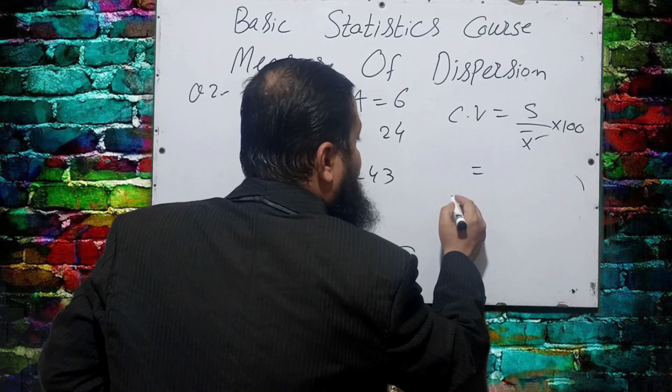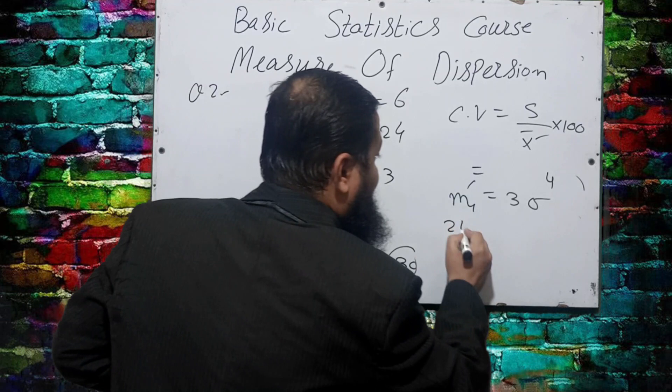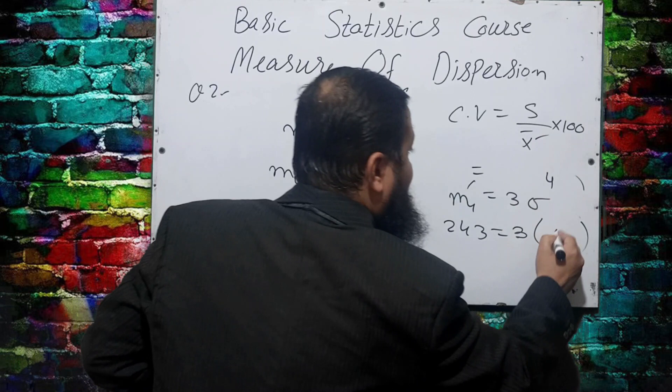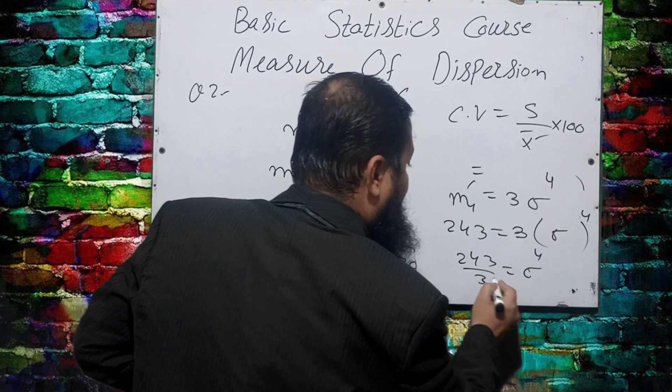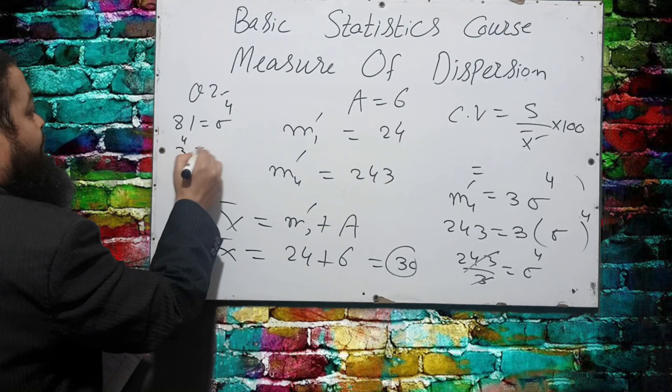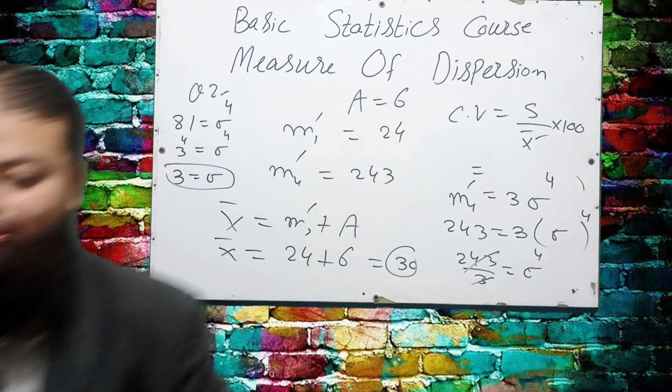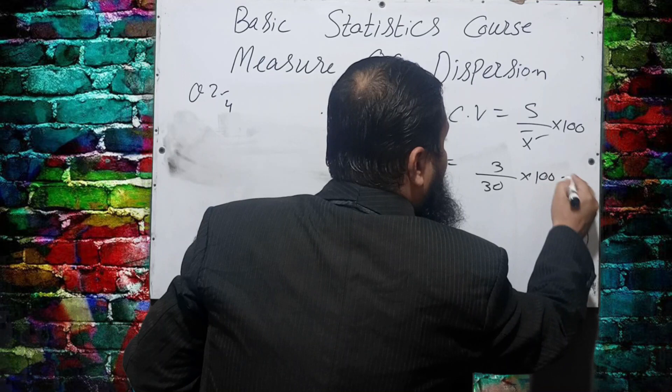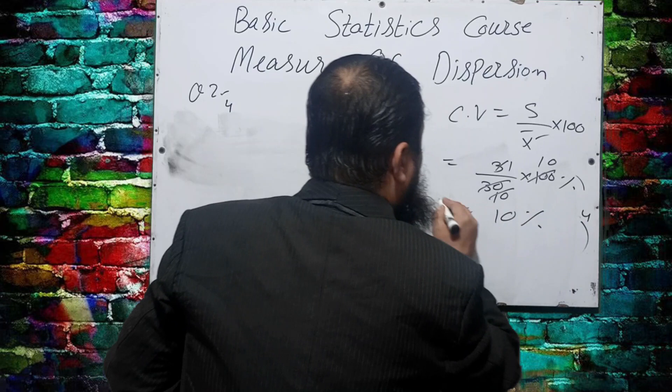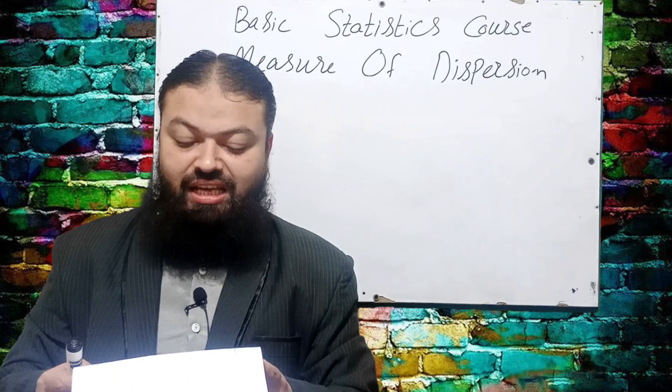Now for the standard deviation: in a normal distribution, m₄' = 3σ⁴. Given m₄' = 243, we have 243 = 3σ⁴, so σ⁴ = 81 = 3⁴, giving σ = 3. Now substituting: CV = (s / x̄) × 100 = (3 / 30) × 100 = 10%. The coefficient of variation is 10%.